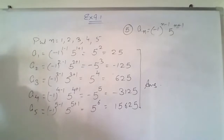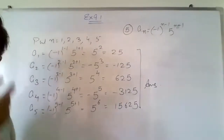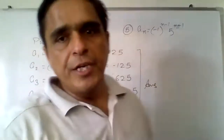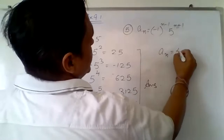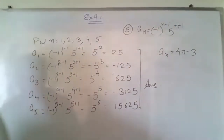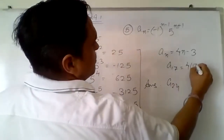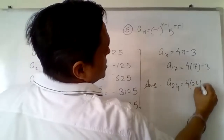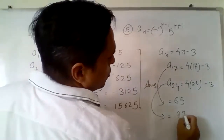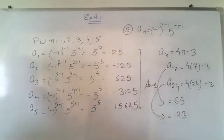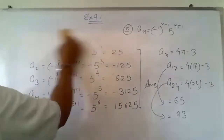The next set of questions from 7 to 10 ask us to find the indicated terms of each sequence. For question 7, a_n = 4n − 3, and we need to find a_17 and a_24. Put n = 17: 4(17) − 3 = 65. Put n = 24: 4(24) − 3 = 93. You just put the indicated values to get the answer.